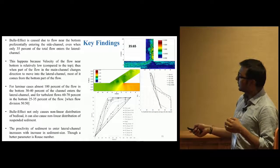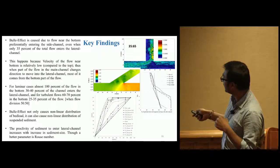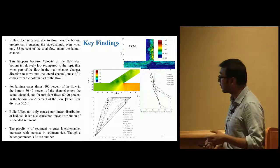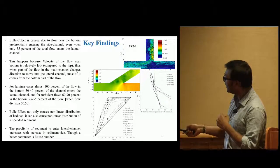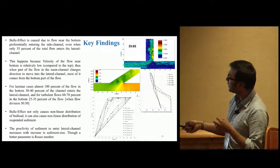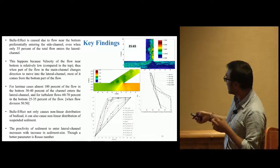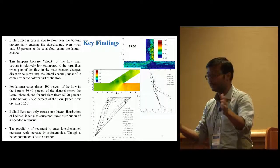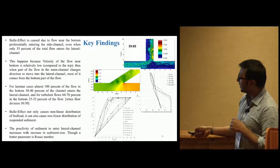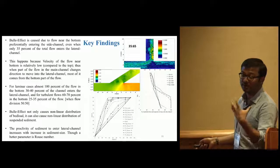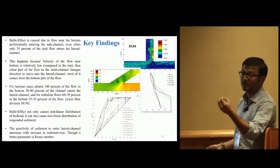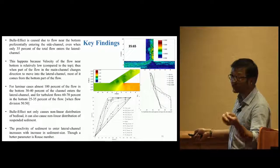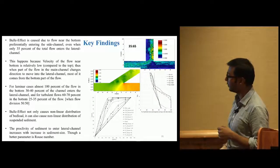For laminar cases, almost 100% of flow in the first 30 to 40% enters the lateral channel - much stronger than turbulent cases. But even in turbulent flow, 60 to 70% of flow at the bottom 30% enters the lateral channel despite 50-50 total split. The non-linearity depends on Rouse number - the ratio of sediment fall velocity to shear velocity.